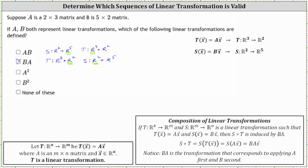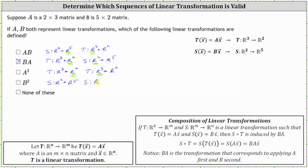Next we have A squared, which means A times A. We want to apply the transformation T twice, where T goes from R3 to R2, and then from R3 to R2 again. This is not defined because the codomain after the first transformation is not the same vector space as the domain for the second transformation — A squared is not defined. Similarly, B squared applies S from R2 to R5 twice, which is again undefined since the codomain R5 does not equal the domain R2. B squared is undefined.